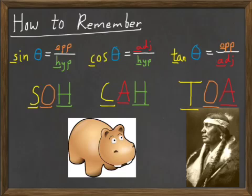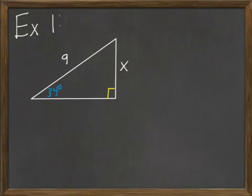Alright, so now let's look at an example of how these are applied. Let me walk you through the steps. The first step is to label the sides of the right triangle with opposite, adjacent, and hypotenuse. My x here is the opposite because it's across from the angle of 34 degrees. The 9 is the hypotenuse because it's across from the right angle.